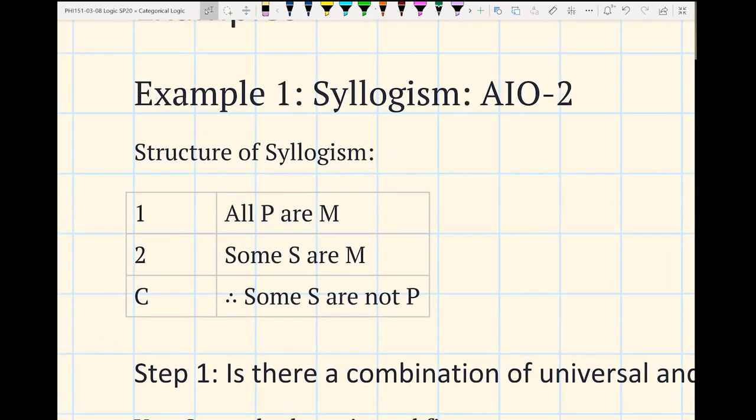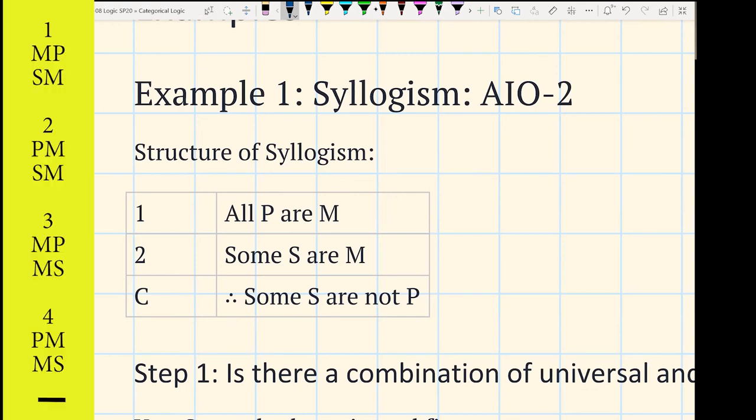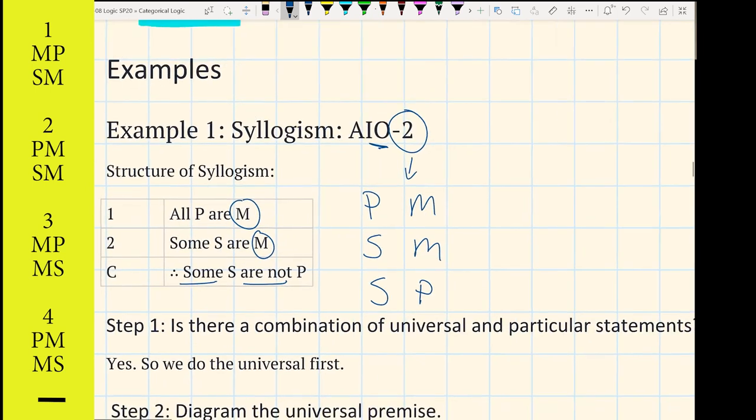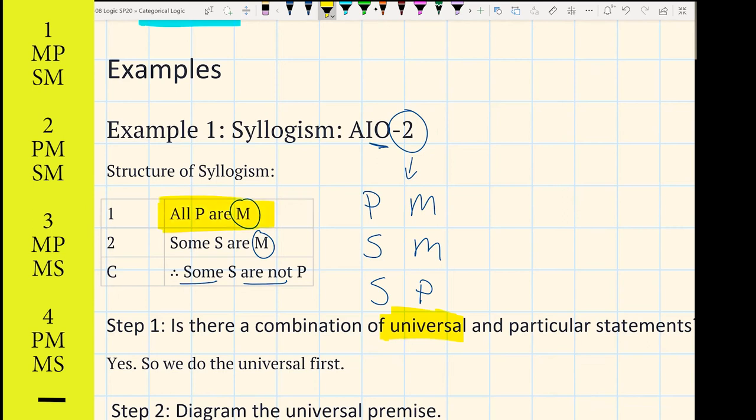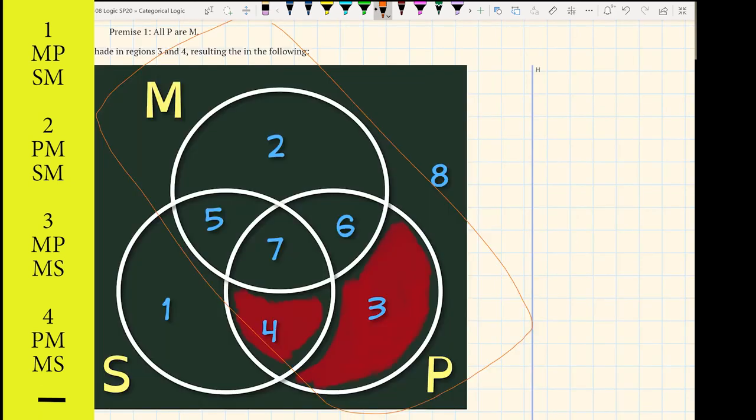So let's walk through one example. We have that AIO-2. And so you can see how this is an A statement, that all P are M, the I, some S are M. And then our conclusion, our figure two has premises, then the middle term, then the subject and the middle term, and then the subject and the predicate. So that tells us where the terms go, and we can see that same pattern in the syllogism. You want to say, is there a universal premise? Absolutely, we have that A, and then our particular statement. We do have one of those, and it's our second one. So we need to diagram that universal premise first, and we have all P are M, which means that there's no P's that lie outside of them, and so we just shade in those regions. So that'll be region three and four.